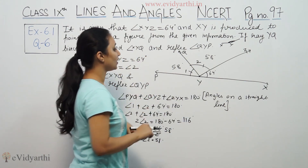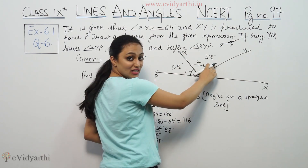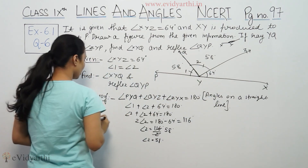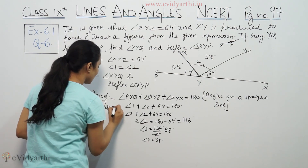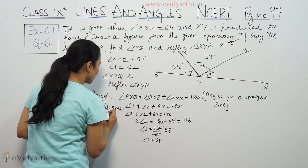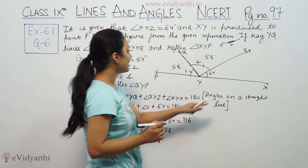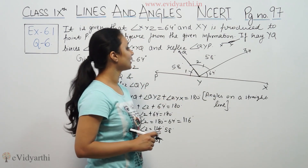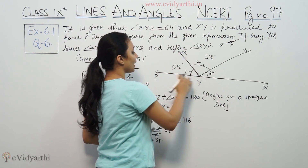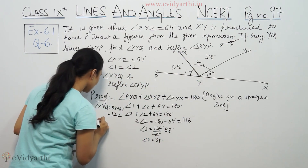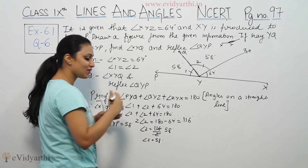Now, angle XYQ equals angle 2 plus angle XYZ, which is 58 degrees plus 64 degrees, giving us angle XYQ. Then we have reflex angle QYP, where QYP equals 58 degrees.